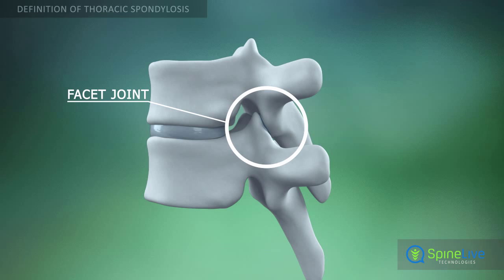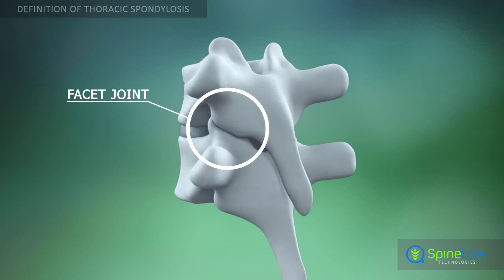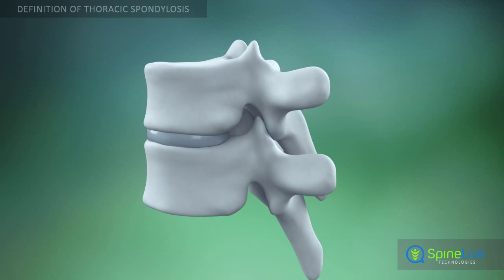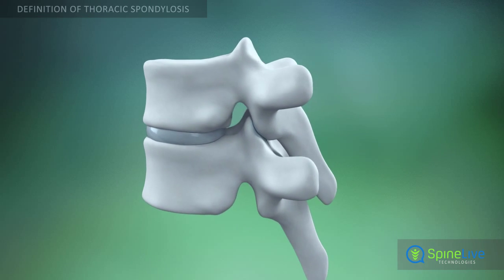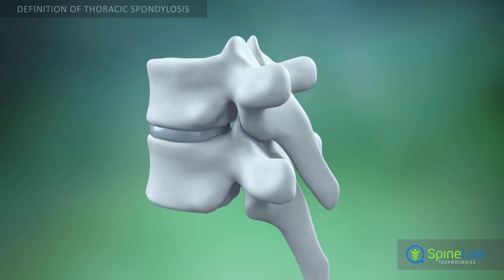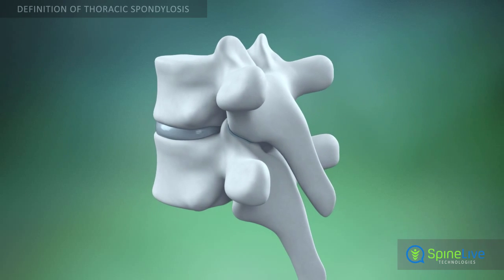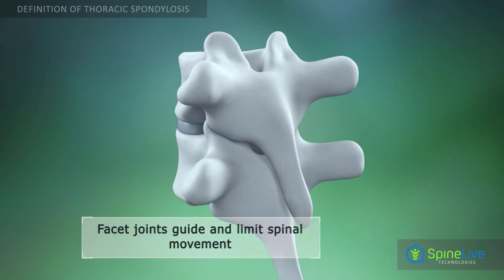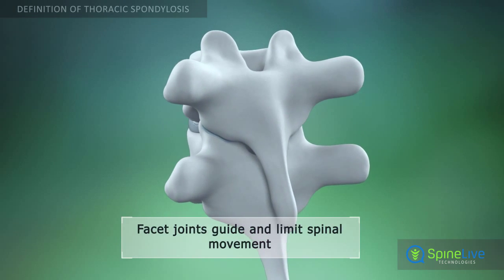Facet joints are located between each pair of thoracic vertebrae. They guide and limit the movement of the spine, providing stability and bearing a share of the load on the spine.